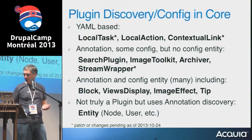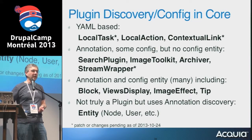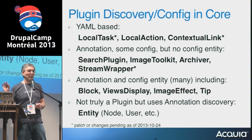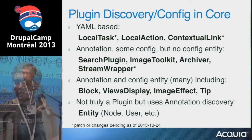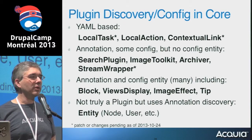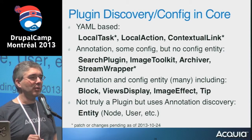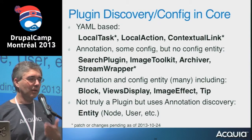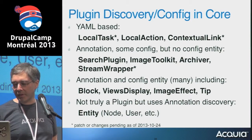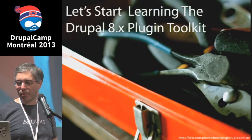A caveat: some of these things still have asterisks. Contextual links have been RTBC about ten times and people keep finding one more thing to fix. Local tasks — we've now converted almost everything in core to use this system, but we'll probably make an API change to rename one or two keys to make a better developer experience, more compact and intuitive. So there are still things in progress, but let's look at how to use the Drupal 8 plugin system.